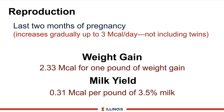A third choice the cow has is reproduction. This becomes a very large energy demand, especially in the last 2 or 3 months of gestation — it increases gradually day by day, and that's been a new change in the NRC. It can be as high as 3 megs per day for one calf. In the U.S., we're seeing as high as 8 to 10% twin births, which would increase that energy demand further.